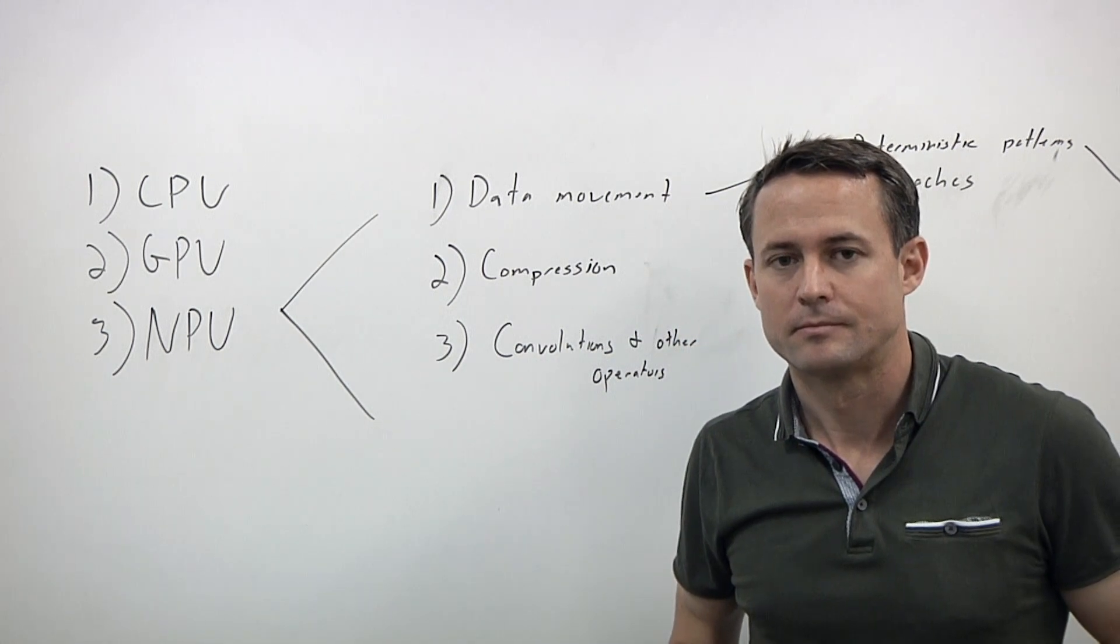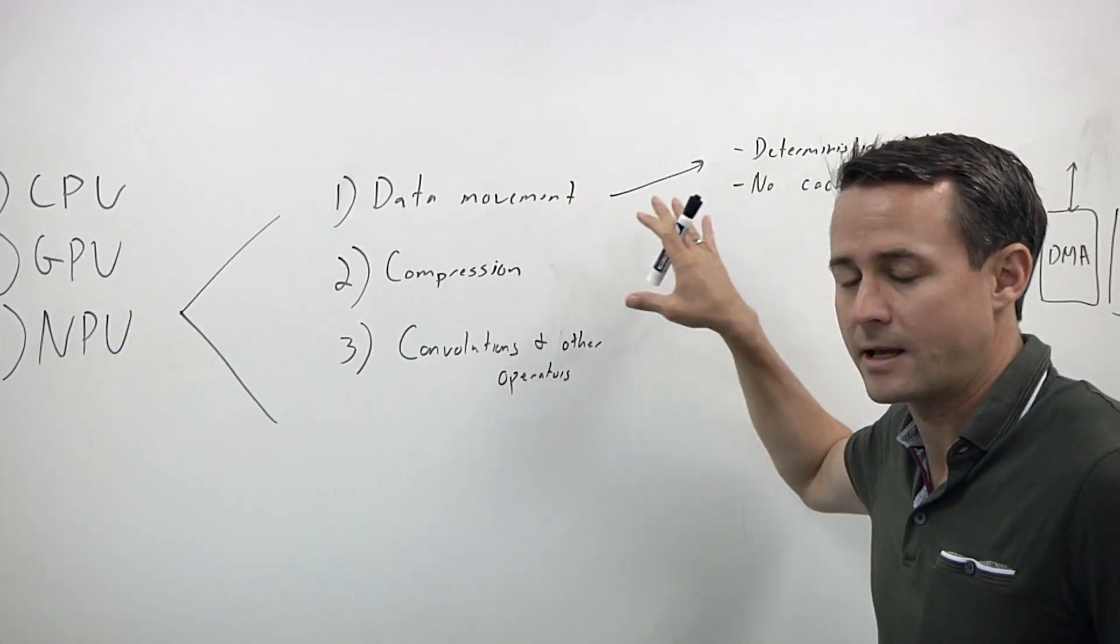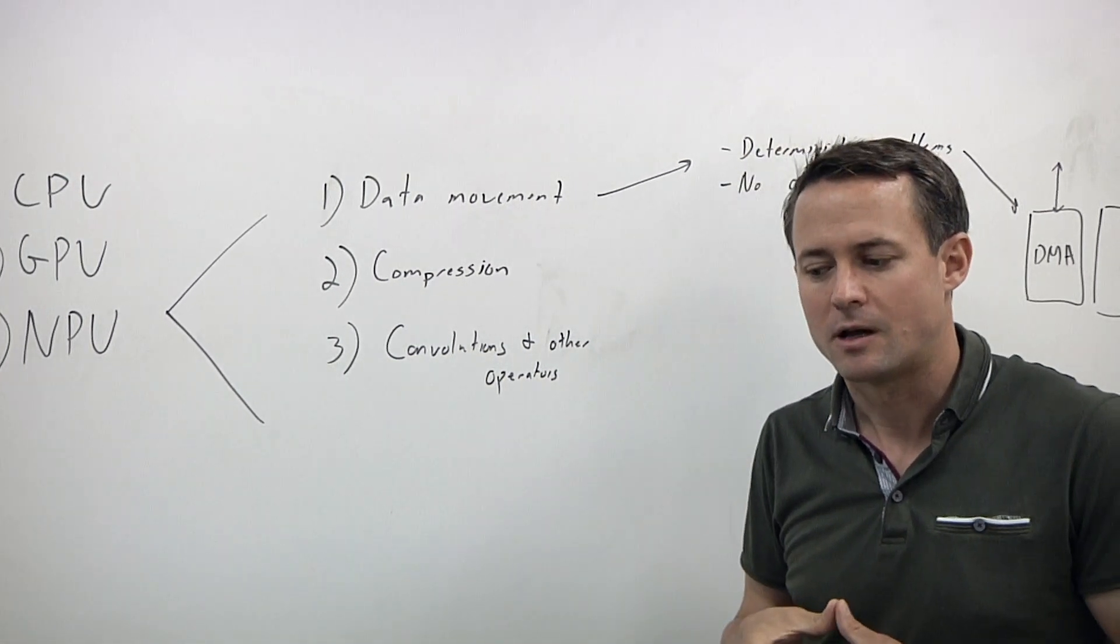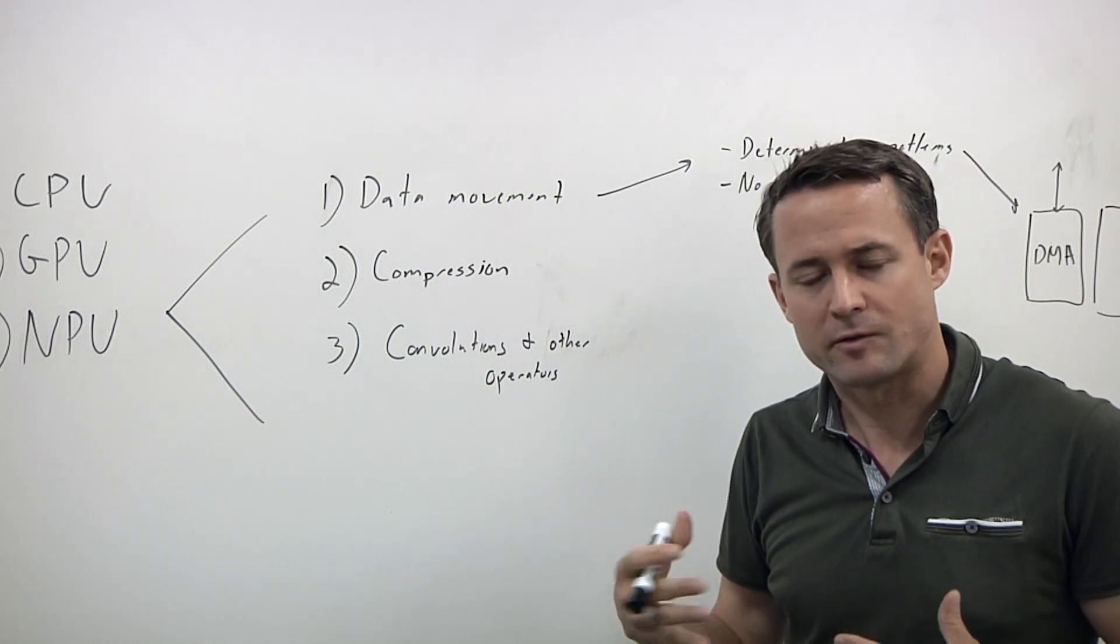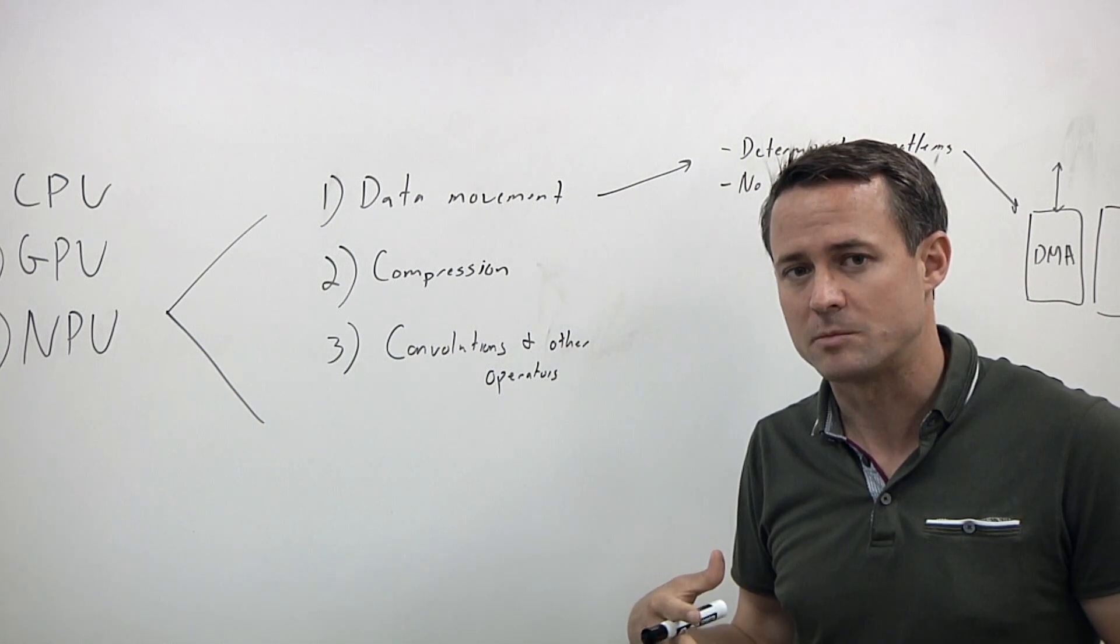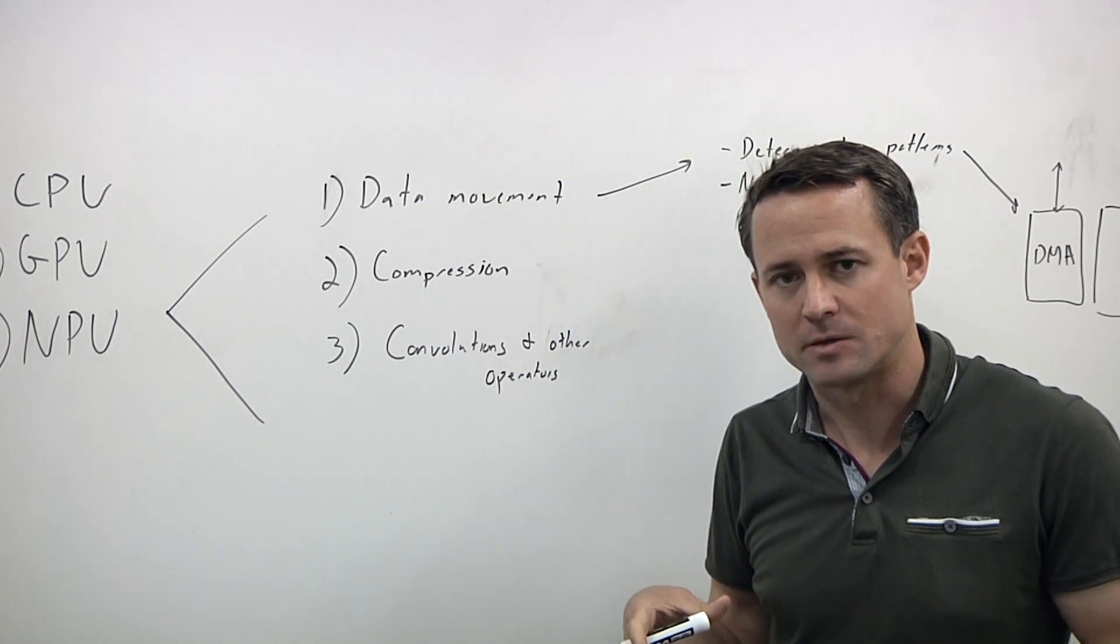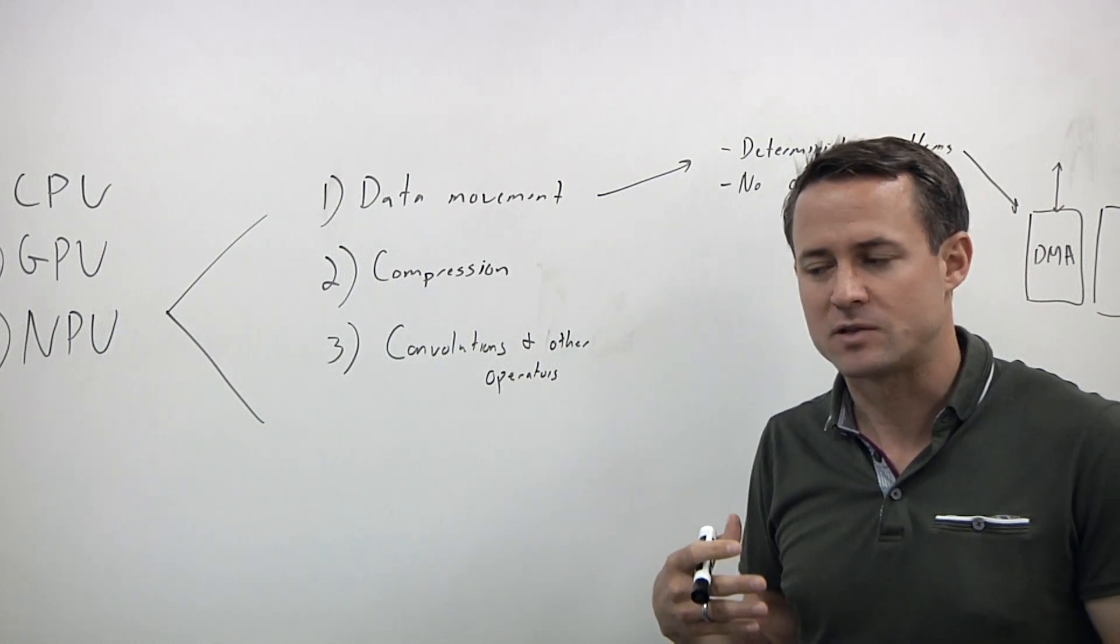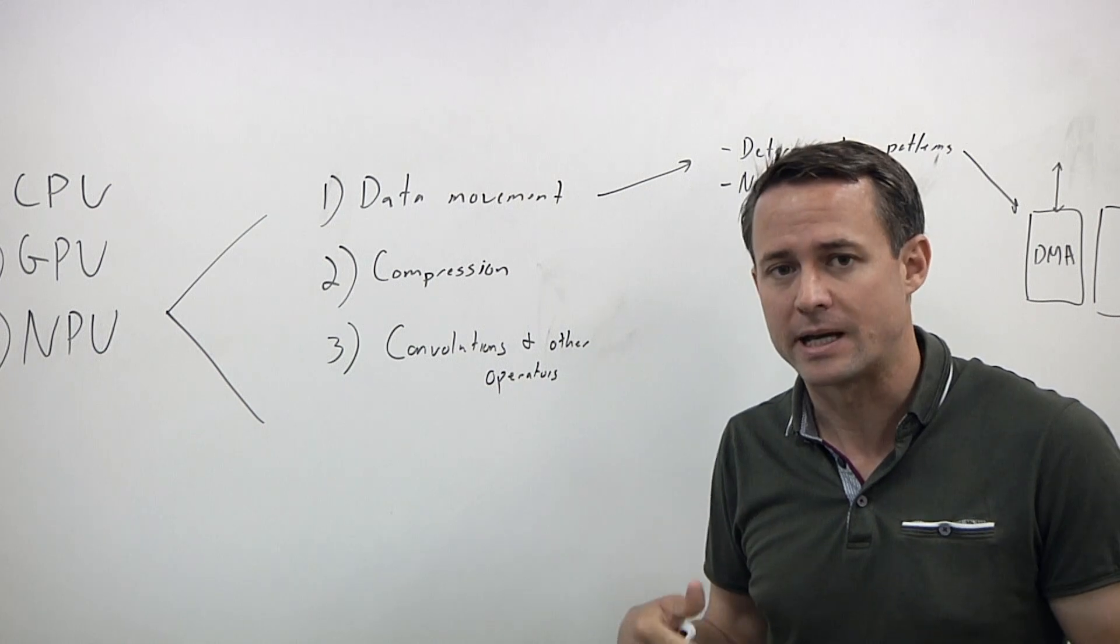Let's drill down into this a little bit further. On the data movement side, an interesting property of machine learning inference is that all of the data accesses are deterministic and can be known at compile time. This is very different from CPU data accesses. I worked on CPUs for a long time, in particular CPU memory systems. A huge percentage of the effort in CPU memory systems is around designing a cache subsystem that can yield high performance in the context of non-deterministic access patterns. You don't know what address you're going to access next.